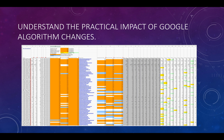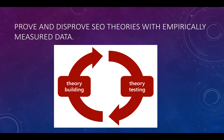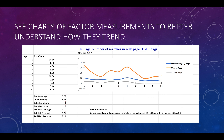You can understand the practical impact of Google's algorithm changes by simply repolling your queries. You can prove and disprove SEO theories with empirically measured data. You can see charts of factor measurements to better understand how they trend.